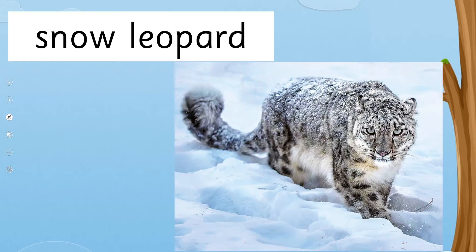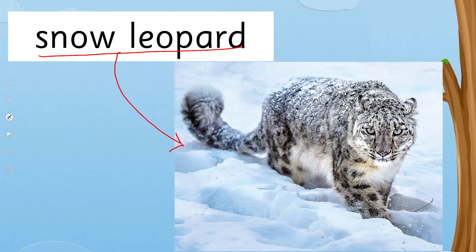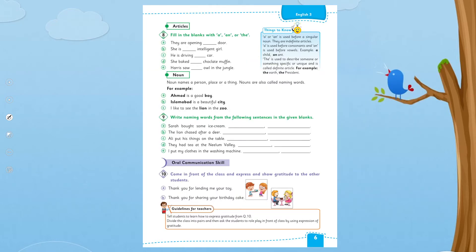Leopard — here is another beautiful animal, the snow leopard. It is one of the rare types of leopard, and Alhamdulillah, in Pakistan we do have the snow leopard. It's also a noun. So what does your book say about it?